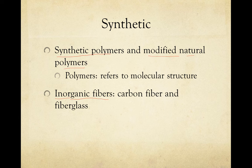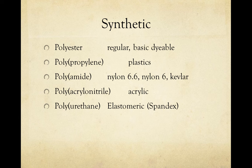Inorganic fibers can also be mineral-based, such as glass fiber, commonly called fiberglass. Some different types of polymer fibers include polyester, polypropylene which is common in plastics, polyamide which is found in nylon and Kevlar, polyacrylonitrile which is in acrylics, and polyurethane which is common in spandex. These are the most common polymer fibers in the synthetic category.